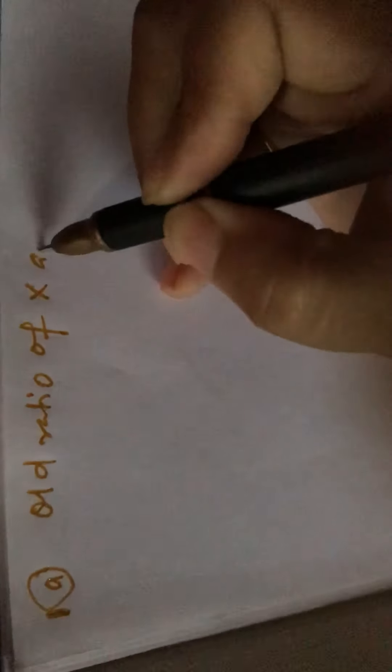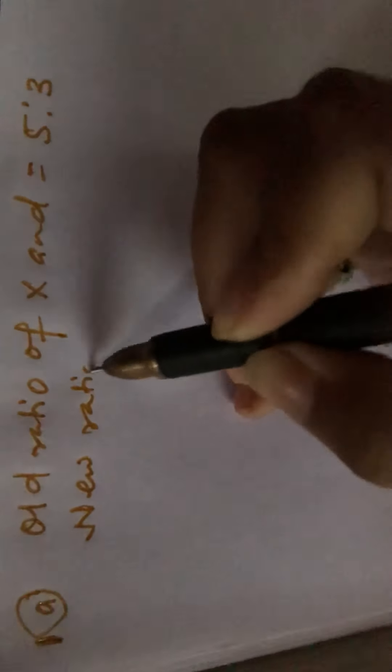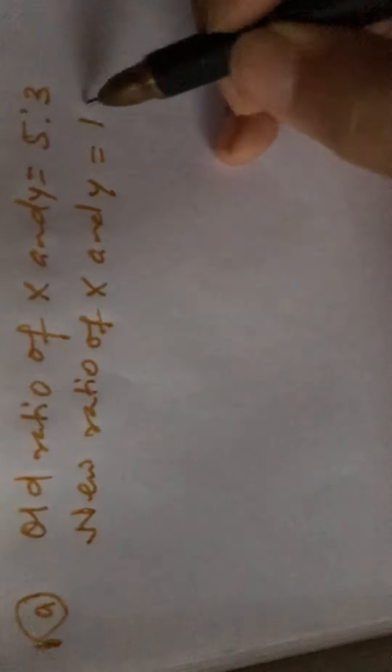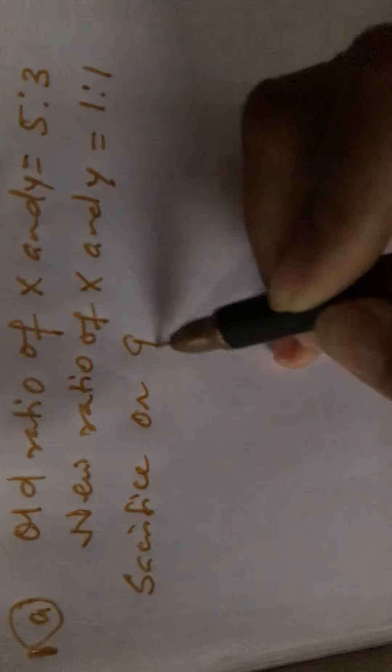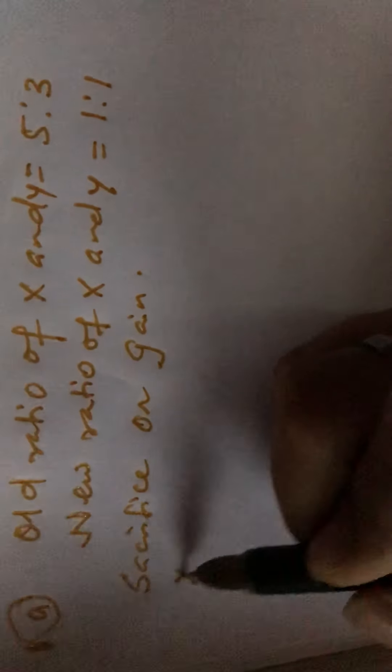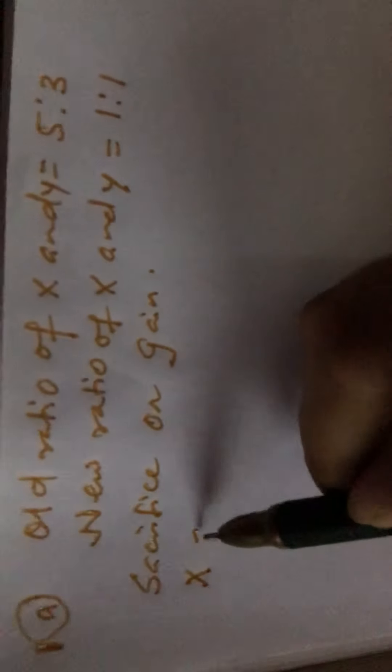First, old ratio of X and Y is given here 5 to 3. New ratio of X and Y equals equal, means 1 is to 1. So we have to calculate sacrifice or gain. So X, you know the formula, sacrificing ratio equals old ratio minus new ratio.